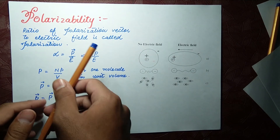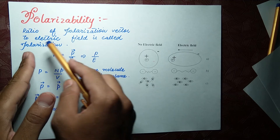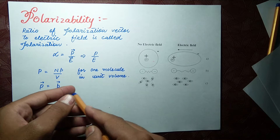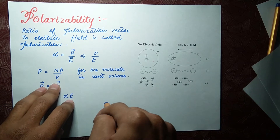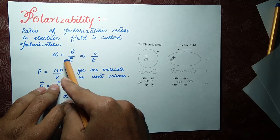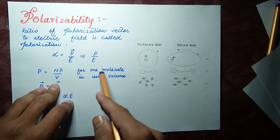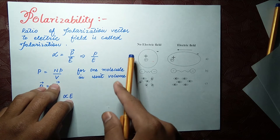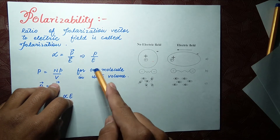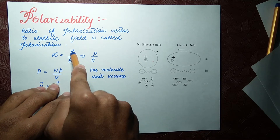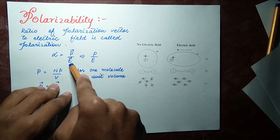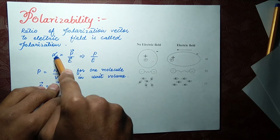Polarizability is the ratio of the polarization vector to the electric field. The polarization vector P is the dipole moment per unit volume — small p divided by v. When this polarization vector is divided by electric field E, we get alpha, the polarizability.